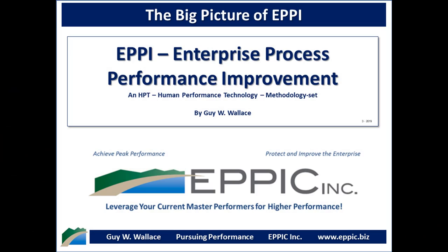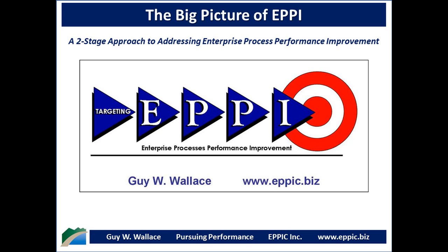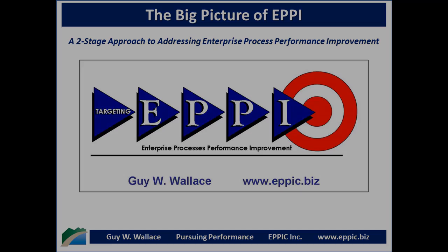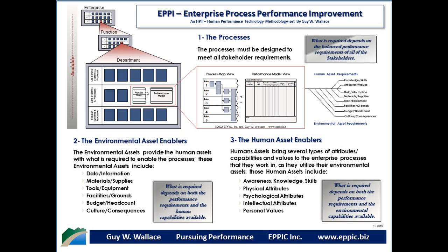Hello, my name is Guy Wallace and I'd like to talk to you about the big picture of EPI, Enterprise Process Performance Improvement, a human performance technology methodology set. EPI is a two-stage approach to addressing and targeting Enterprise Process Performance Improvement. The big picture of EPI includes a look at the enterprise and breaking it down into functions and departments where we can begin to look at three different sets of processes.